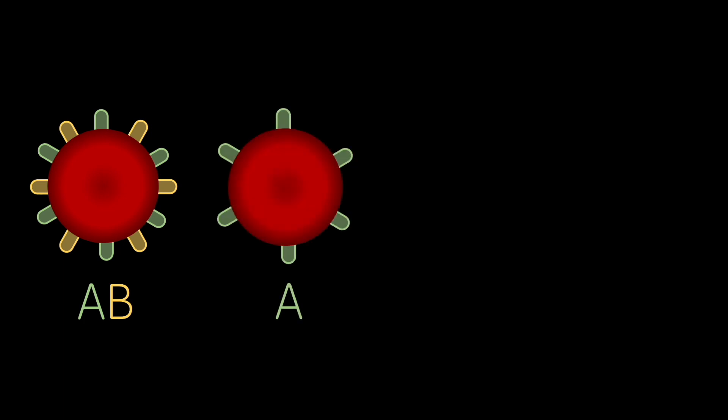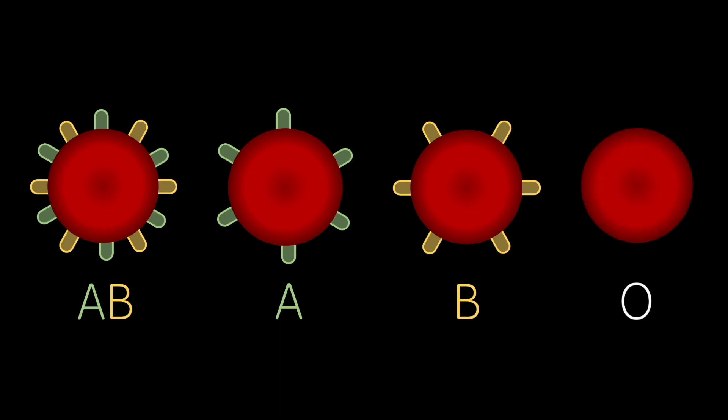The four main blood types are AB with both A and B antigens, type A with only A antigens, type B with only B antigens, and type O with neither antigen.